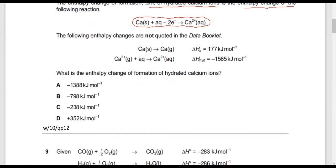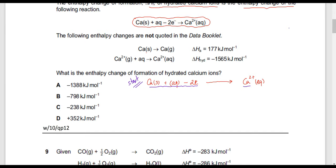Now how are we going to calculate this? I'm going to write this reaction first. It's calcium solid plus aqueous, then there are minus two electrons being subtracted, and in the products I have to make calcium 2+ aqueous. This is my product. I'm going to write my start point and my end point. This is where I'm starting — this is my start — and this is where I need to end. This is my end point, and this is the enthalpy change I need to figure out. Let's call that delta H1, or delta Hf.